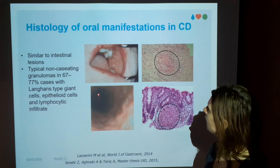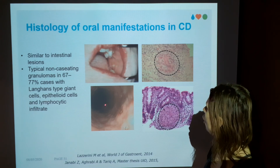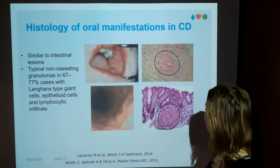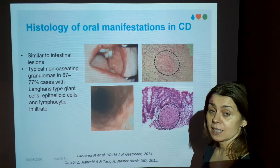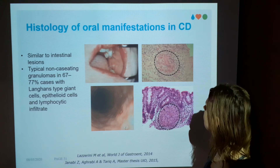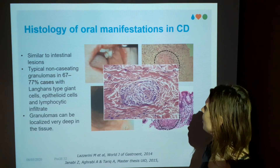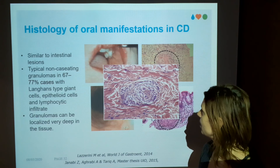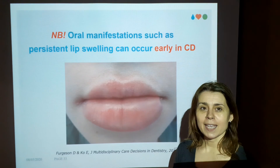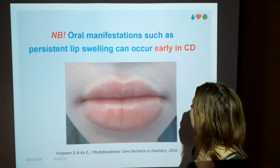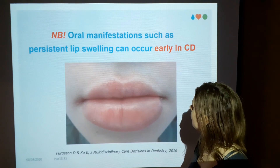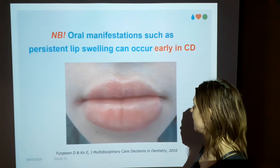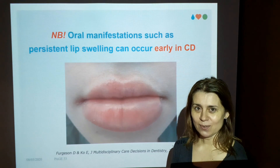The histology is very typical and similar between oral and intestinal lesions. Pathognomonic is the presence of Langhans giant cells, though in about 30% of cases they may not be present; epithelioid cells and scattered lymphocytes are also characteristic. Remember they can lie deep in the tissue, so take a deep biopsy when you have a suspicion of Crohn's disease. Finally, persistent lip swelling with fever should ring a bell that this could be something as severe as Crohn's disease. Thank you for your attention.